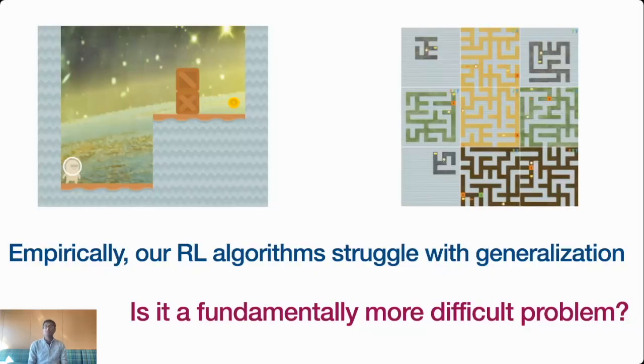A lot of works in the last few years have empirically investigated how well RL algorithms generalize, and to summarize them in a nutshell, they don't. This is a little surprising, given that we know how generalization works in supervised learning. It begs the question, is generalization in RL a fundamentally more difficult problem, or have we just not figured out the empirical details yet?